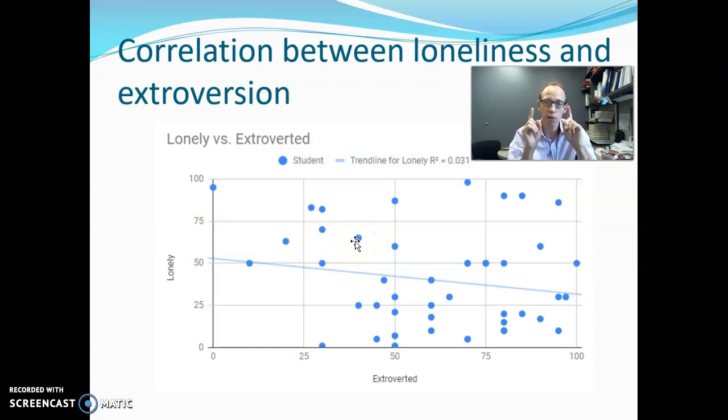But that is a student that we have data for two variables on. Similarly, this student here, we know that their extroverted rating was about 60, but that they weren't rating themselves as very lonely at all, maybe a 10.